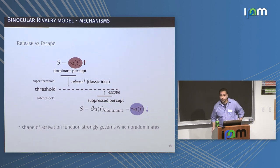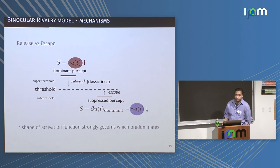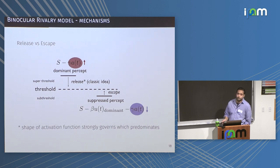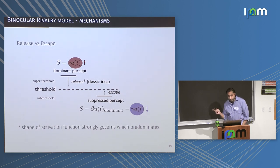Question from audience: Can you make clear why the fatigue function has to be on the suppressed percept and not the dominant one? Couldn't you just as easily have the fatigue on the dominant percept, and if you got the same time course, wouldn't it give the same result? Response: No — let me explain that. There are two ways you can have a switch.